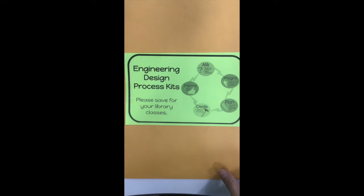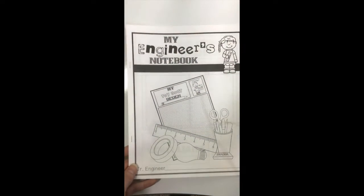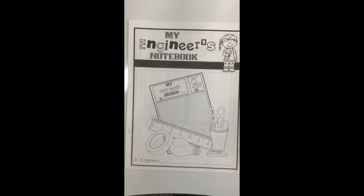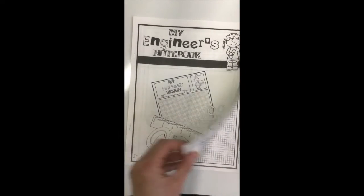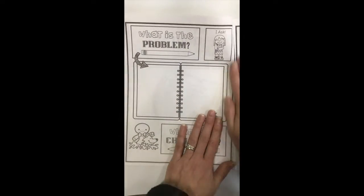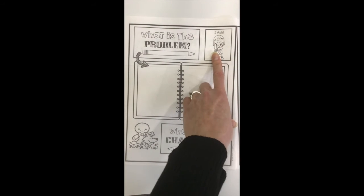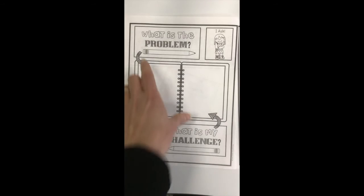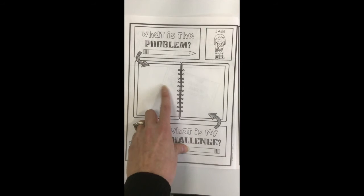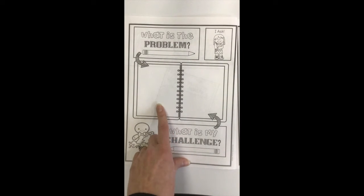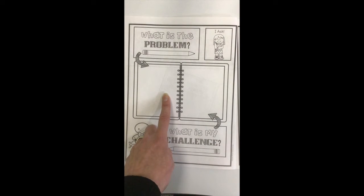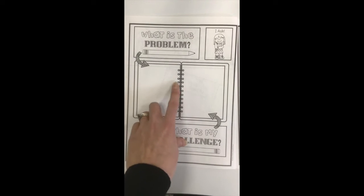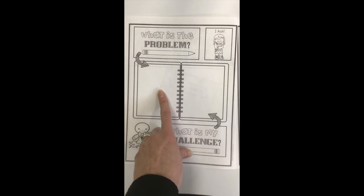Here is what the kit looks like that you should have received, and in there is this engineer's notebook. This notebook is also going to be in Seesaw that I'll show you in a little bit, but you can use the actual pages if you want. Your name goes right down here — you are the junior engineer. The first page says I ask. We can't just jump right into creating; we have to ask questions and fully understand the challenge. The problem is that gingerbread Fred was eaten by that fox — that was a big problem and a really bad ending.